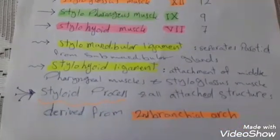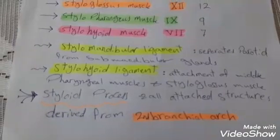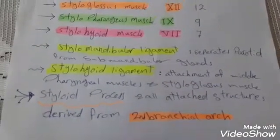Good to know that styloid process and all attached structures are derived from the second branchial arch.